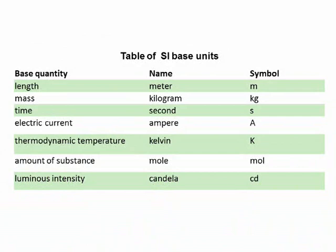Let's now take a look at where those units come from. This is the table of the base SI units. There are seven of them: meter, kilogram, second, ampere, kelvin, mole, and candela. Of these, we use the top four — meter, kilogram, second, and ampere. From these base units, other units are created that are called derived units.